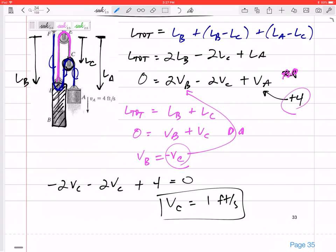And then plug it in somewhere over here. And I'd get VB as negative 1 foot per second. So B is moving down at 1 foot per second, C is moving up at 1 foot per second, and A, we were told, was moving down at 4 feet per second.